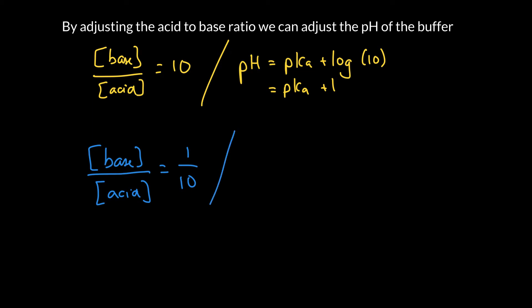We can use the Henderson-Hasselbalch equation to calculate the pH of our buffer now. And it's going to be pKa plus the log of base-to-acid. So that ratio is 1 over 10. The log of 1 over 10 is actually minus 1. So that gives us a pH that is one unit below our pKa.